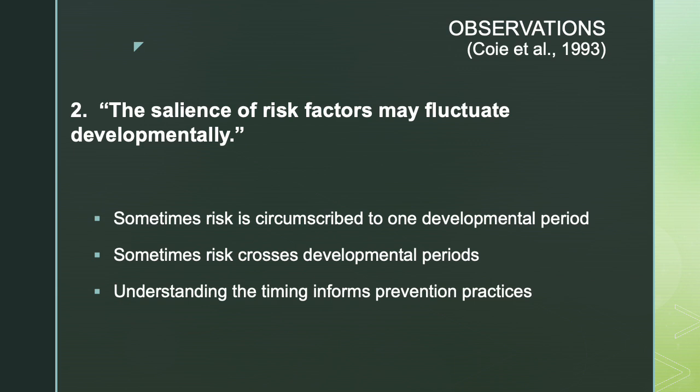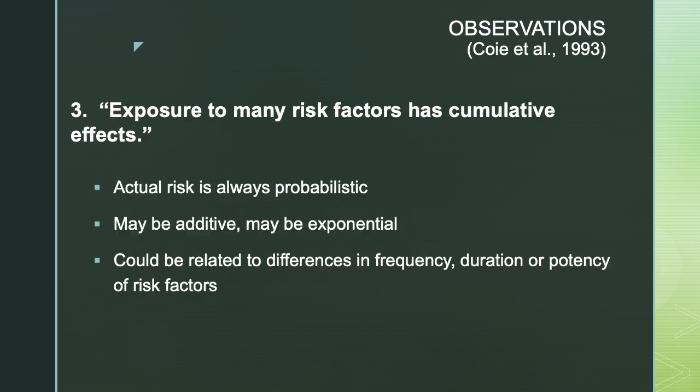We need to make sure that we are targeting the developmentally appropriate risk factor at the developmentally appropriate time. For example, if we discover that bullying in middle school actually has precursors that emerge in early childhood, you'd want your prevention program to focus on the early childhood period. The third observation is that exposure to many risk factors has cumulative effects on the individual. Risk is always probabilistic — never a deterministic if A then B — but risk factors increase or decrease the probability that something's going to occur. When multiple risk factors are involved, their interactions could lead to an additive effect or an exponential effect such that certain multiple risk factors become greater than the sum of their parts.